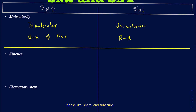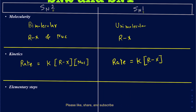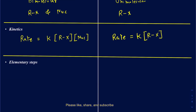When we're looking at kinetics, for SN2 — since it's bimolecular — the rate equals some rate constant K, and it's first order with respect to the alkyl halide and first order with respect to the nucleophile. On the other hand, for SN1 — since it's unimolecular and only dependent on the alkyl halide — the rate equals K times [RX]. Overall, SN1 is a first-order reaction and SN2 is a second-order reaction.